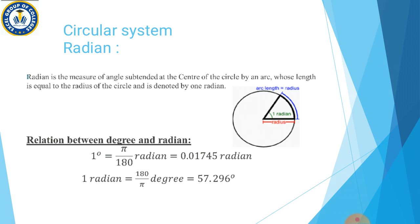Relation between degree and radian: One degree is equal to pi divided by 180 radian. Pi ki jagah 3.1416 put karke 180 pe divide karein to answer aayega 0.01745. One radian is equal to 180 divided by pi degrees. Yahan aap pi ki jagah 3.1416 put karenge aur 180 ko 3.1416 pe divide karenge, to aap ke paas answer aayega 57.296 degrees.